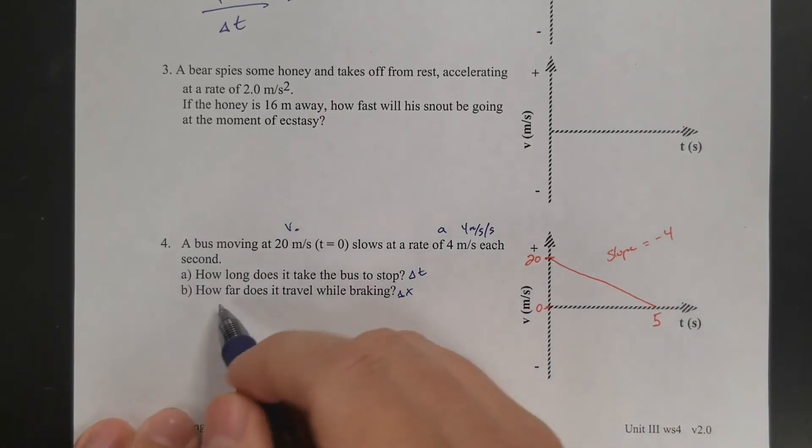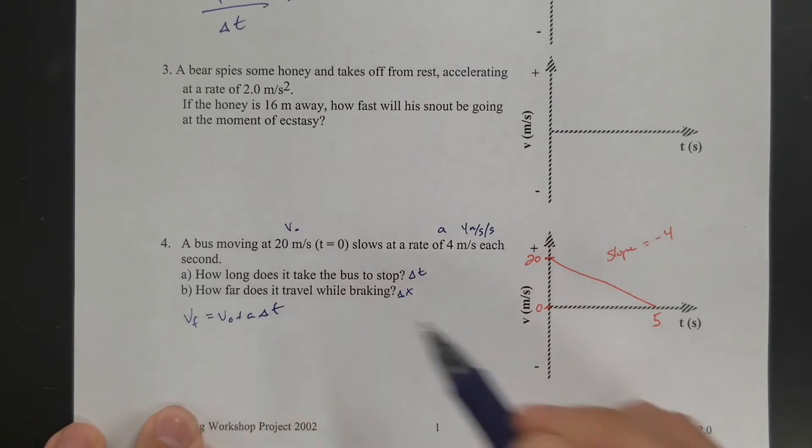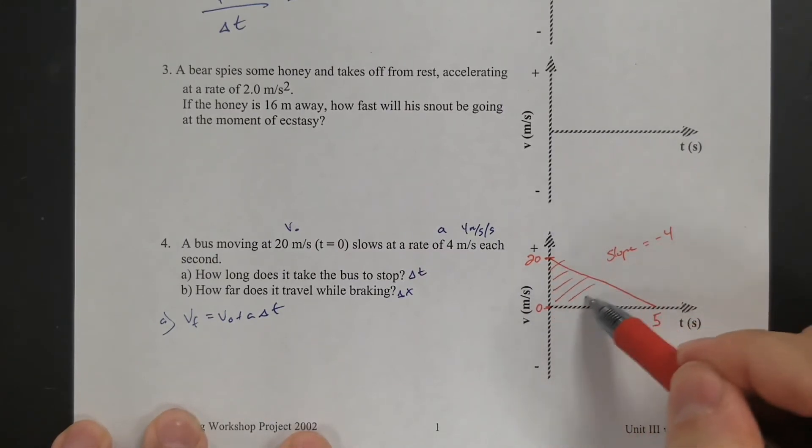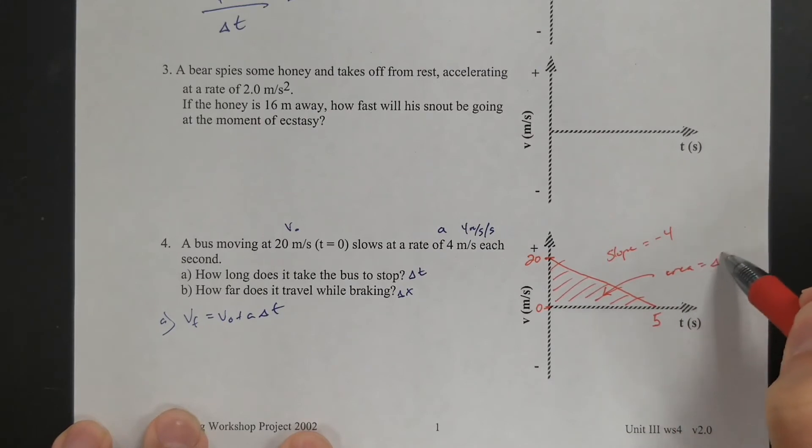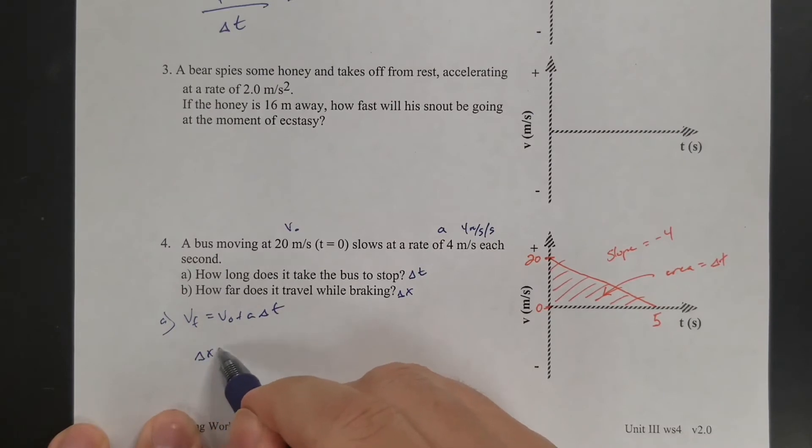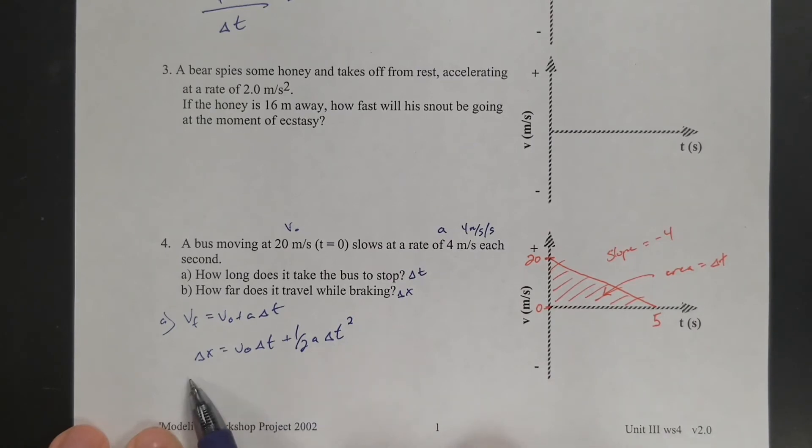Or, right, again, equation: VF equals V naught plus A delta T. I could use that to solve for A. So then how far does it travel while braking? So again, that area is equal to the displacement. So all I have to do is solve for that area. Or you could use delta X equals V naught delta T plus 1 half A delta T squared. And you could solve for the whole distance that it travels while braking.